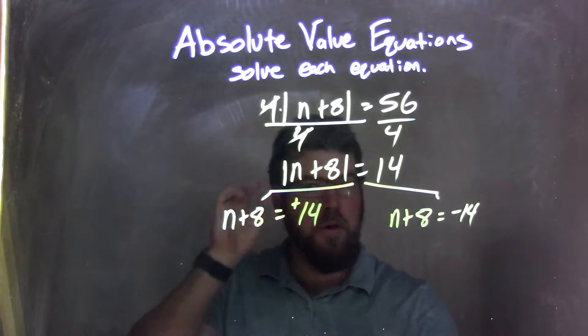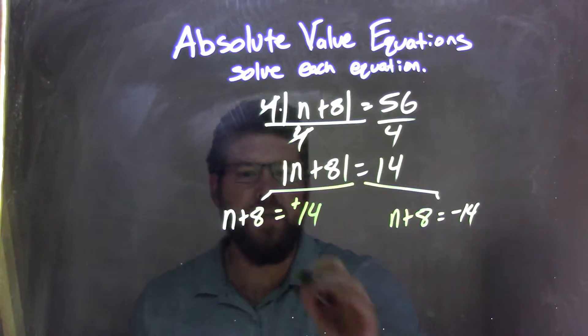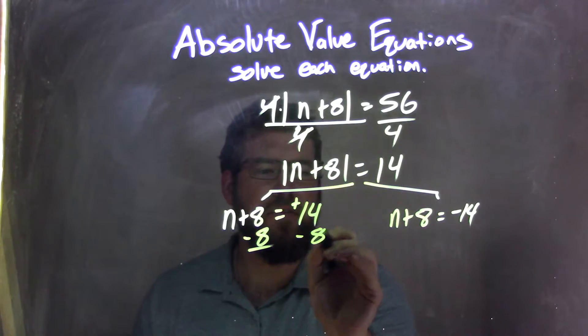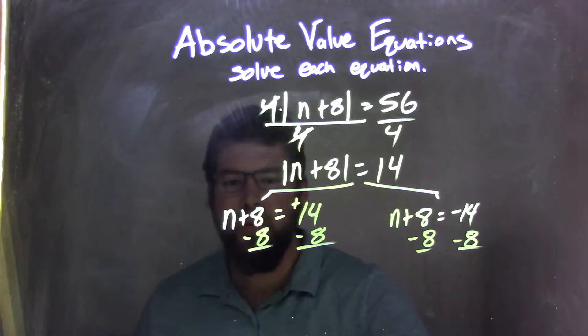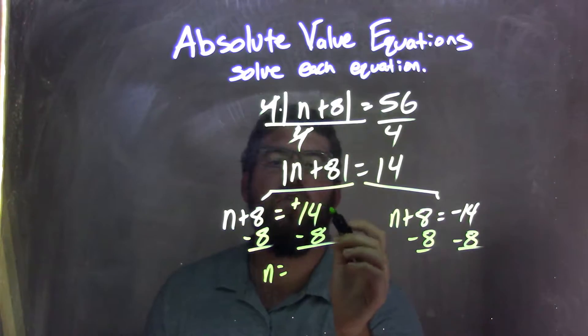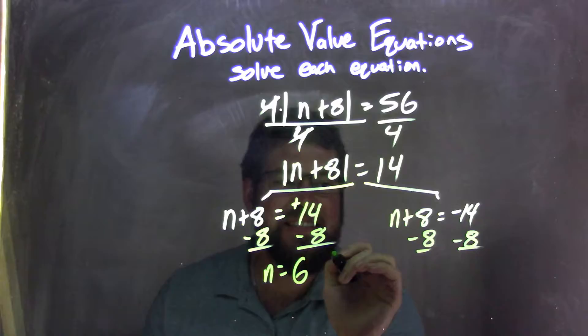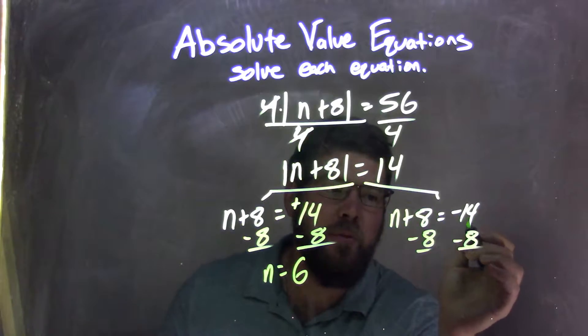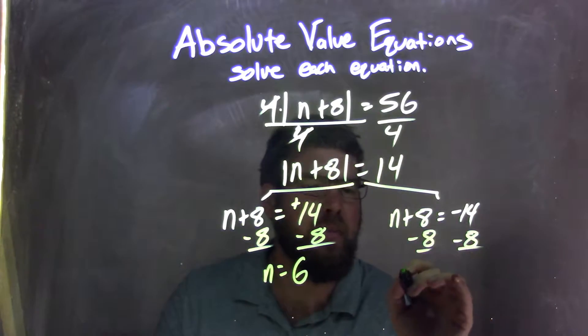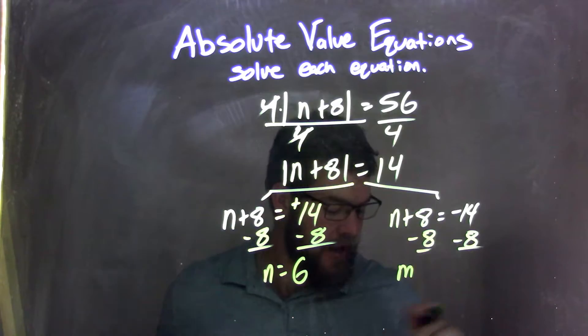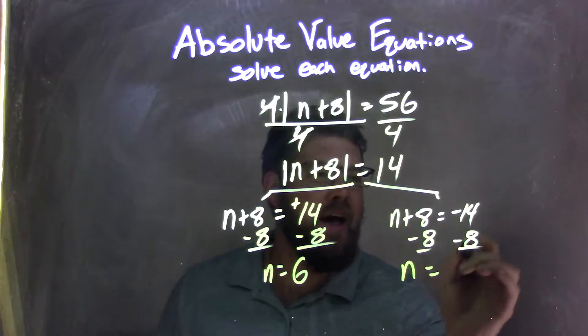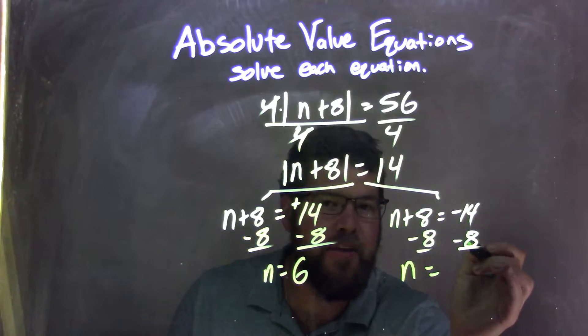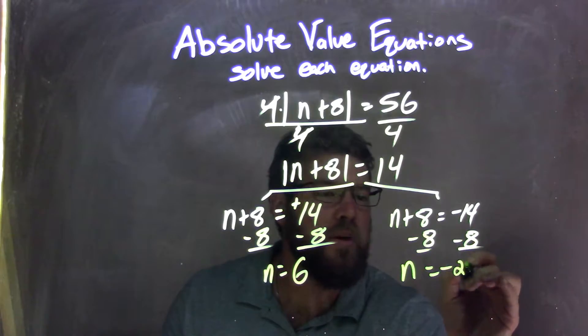Now I can solve each equation individually. I subtract 8 from both sides, leaving me with n by itself. 14 minus 8 is 6. For the other equation, negative 14 minus 8 is a more negative number. So n equals negative 14 minus 8, which is negative 22.